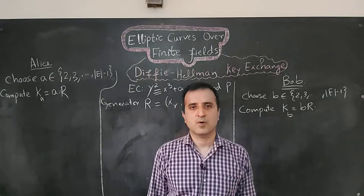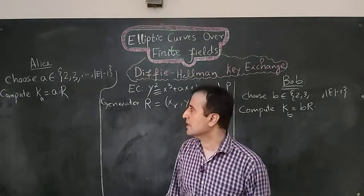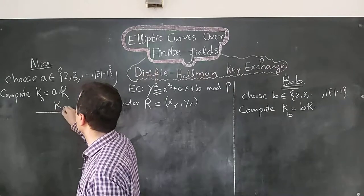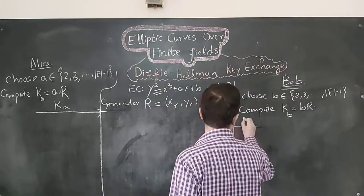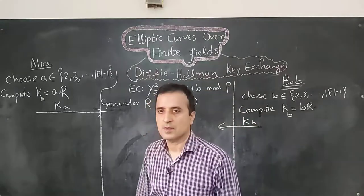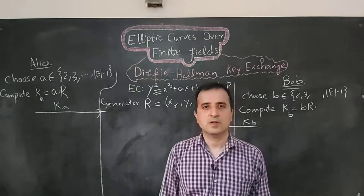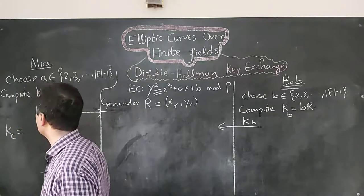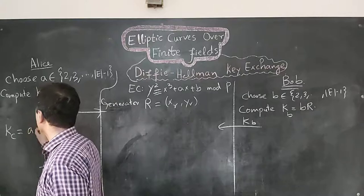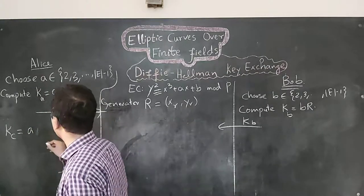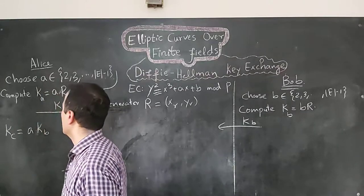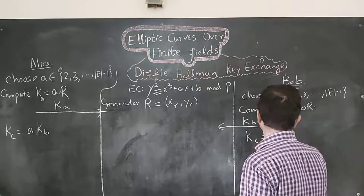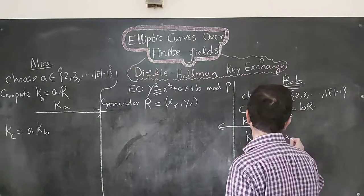Subsequently, Alice and Bob will broadcast their public keys. The common private key KC will be B times the public key of Alice, which equals A times the public key of Bob.